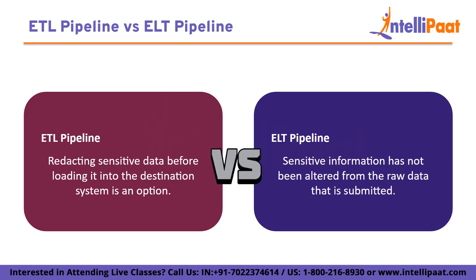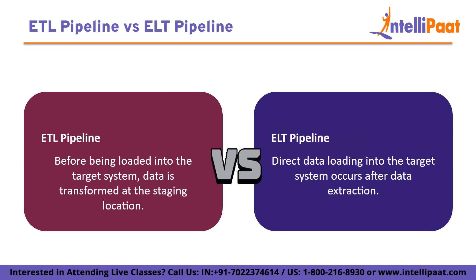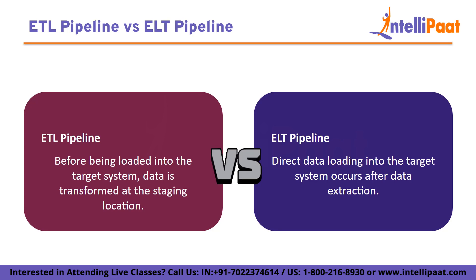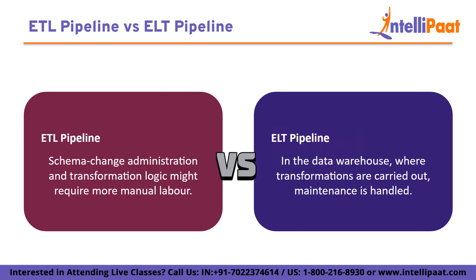Comparing ETL and ELT pipelines in terms of parameters. In privacy compliance, redacting sensitive data before loading it into the destination system is an option in ETL, whereas in ELT, sensitive information has not been altered from the raw data that is submitted — managing masking in the target system is necessary. In terms of order of the process, before being loaded into the target system, data is transformed at the staging location in ETL. In ELT, direct data loading into the target system occurs after data extraction, and the target system is in charge of the transformation steps.